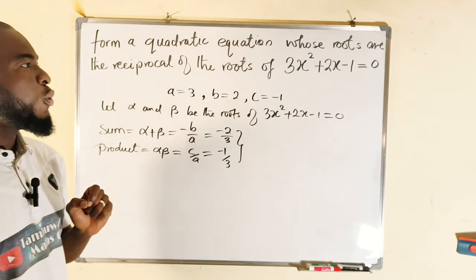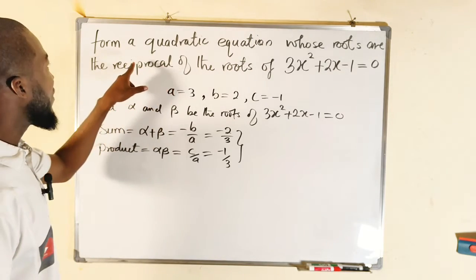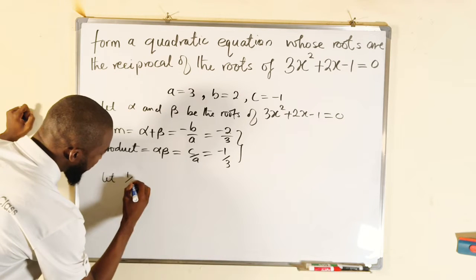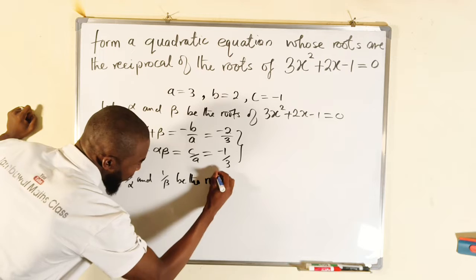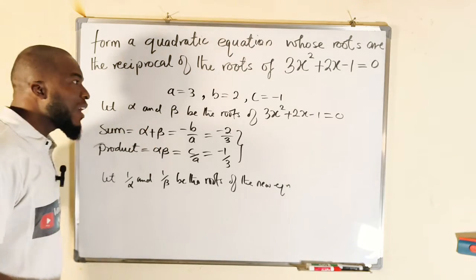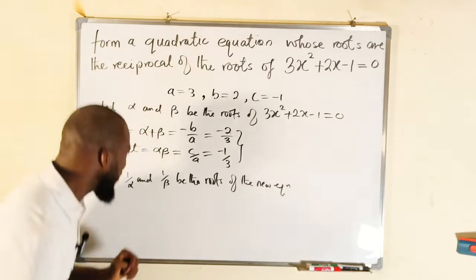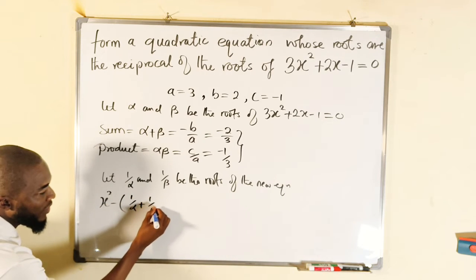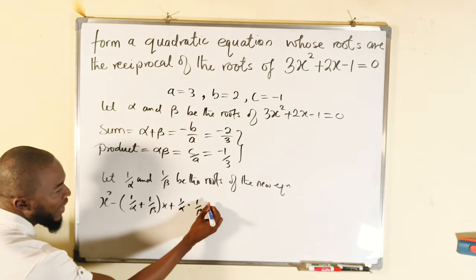So that particular equation we want to form will have roots 1 over alpha and 1 over beta, because it's stated clearly that the roots are the reciprocal of each other. Let 1 over alpha and 1 over beta be the roots of the new equation. Using the sum-product method of forming a quadratic equation, we can generate it using 1 over alpha and 1 over beta. It will be: x squared minus (1 over alpha plus 1 over beta) times x, plus (1 over alpha times 1 over beta) equal to 0.